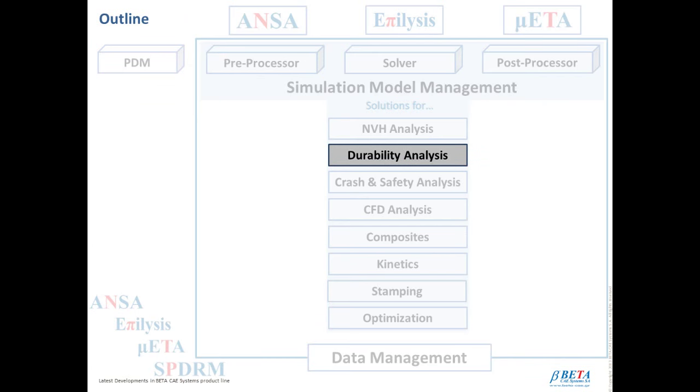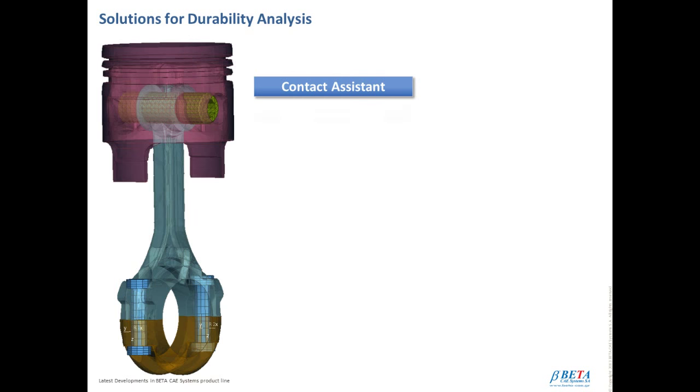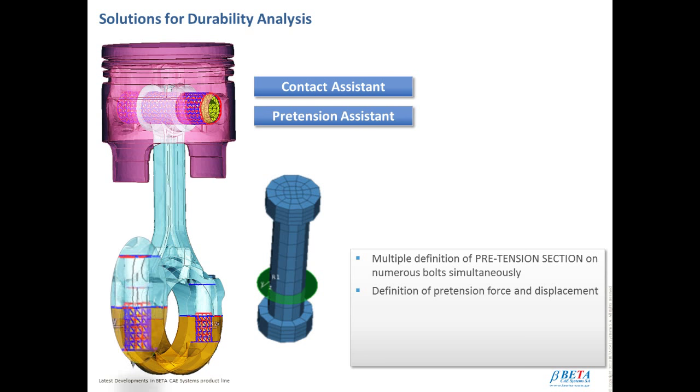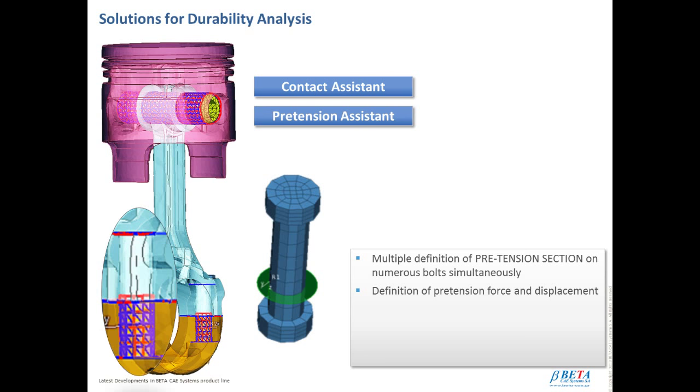BetaSuite offers a broad range of automated tools and functionalities for the definition of the modeling steps of durability analysis, while efficiently supporting popular codes such as Nastran, ABAQUS, and ANSYS. Towards this direction, the contact assistant guides the definition of contact interfaces of areas of interest, offering a preview, plane interaction, massive modification capabilities, and many more. While all required steps of retention definition are integrated into the single stepwise tool, the pretension assistant, where the vector and section are prescribed with minimum user interaction.